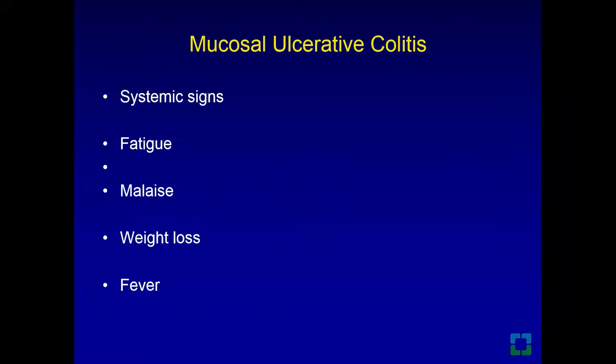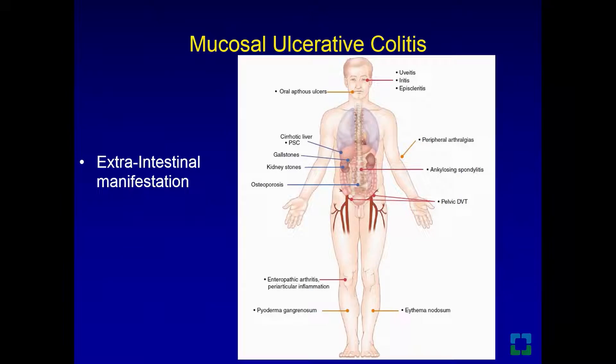Because of the cramps, dominant pain, and diarrhea, in addition to losing important nutritional factors, patients try to avoid eating. Therefore they become anemic and hypoalbuminemic, resulting in fatigue, malaise, and weight loss. There are also extra-intestinal manifestations that affect the majority of the body, as depicted in the diagram.